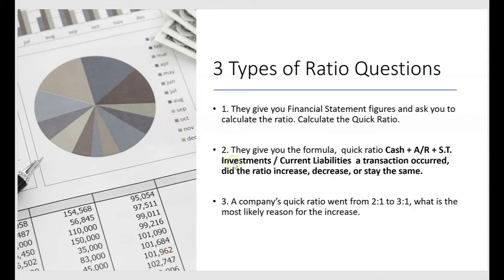Types one and two are likely to appear on FAR, Audit, or BEC. For type three, if it's a common ratio like inventory turnover, receivables turnover, quick ratio, or current ratio, the exam will expect you to already know the formula. But if they give you an uncommon ratio — like a capital expenditures ratio or operating cash flow ratio — they'll probably provide the formula before asking why it increased or decreased. So, three types of ratio questions — let's get started.